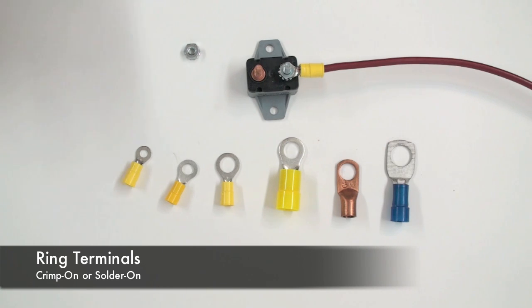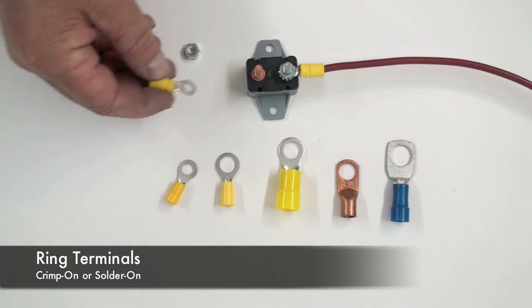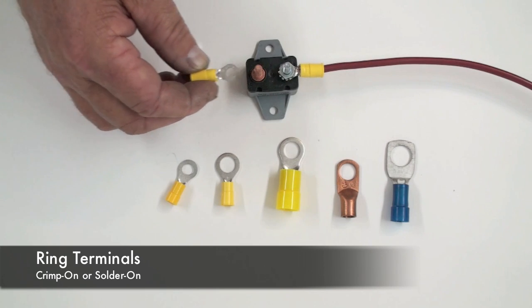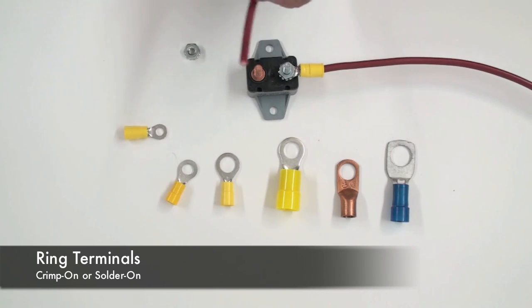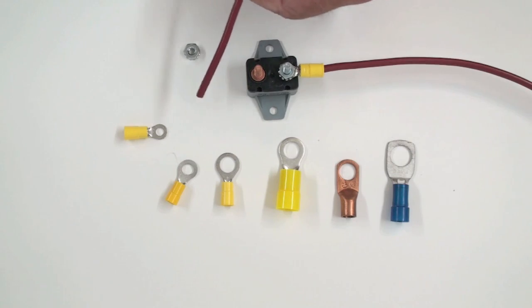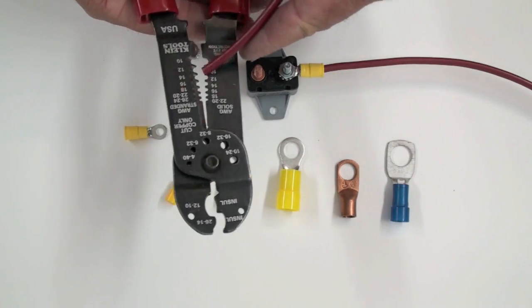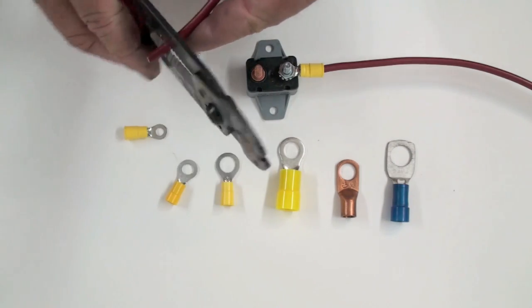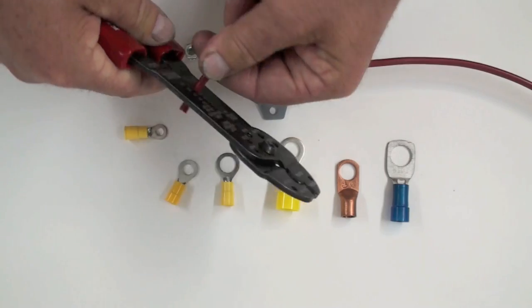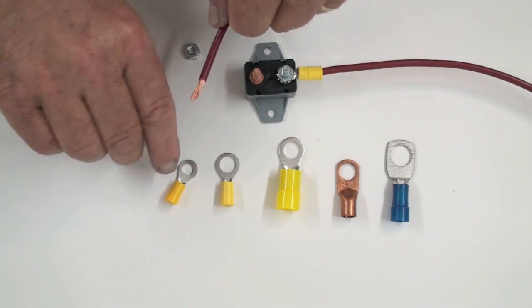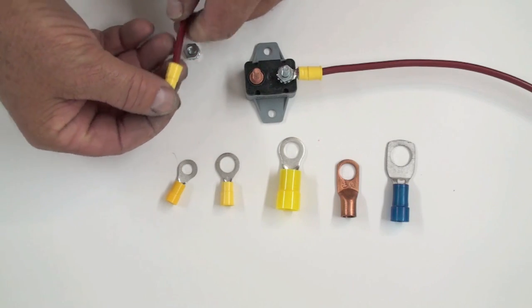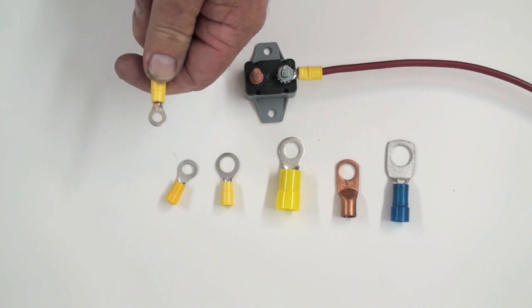To use these, you simply select the appropriate size that fits your screw or post, in this case a 3/16th hole. I'm going to use a 10 gauge wire, so you simply strip off a short section with the wire stripper, slide the terminal over the end of the wire, and crimp it.